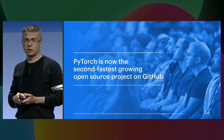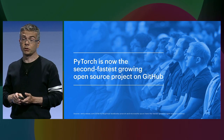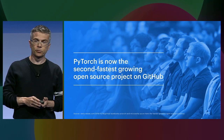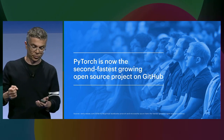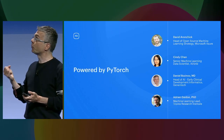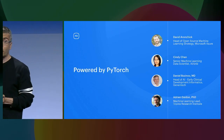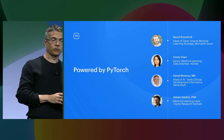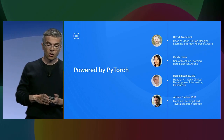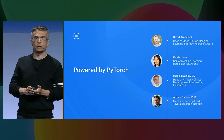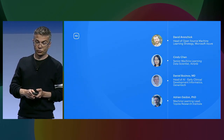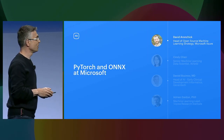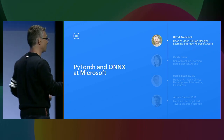PyTorch is the second fastest growing open source repository on GitHub, and we're really super excited to see a growing number of companies using PyTorch for research and for production. Today we're really fortunate to have representatives from four of these companies — Microsoft, Airbnb, Genentech, and Toyota Research Institute — and they'll tell us how PyTorch is helping them build, train, and deploy production-ready AI. To get us started, I'm going to call to the stage David Aranchik from Microsoft, to tell us how they use PyTorch to create machine learning at that scale.